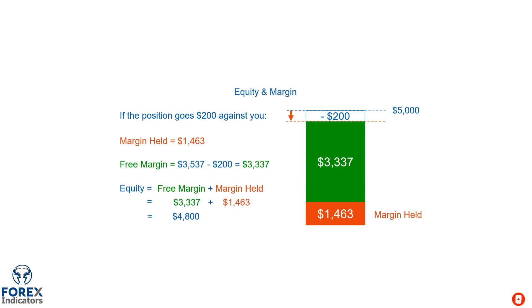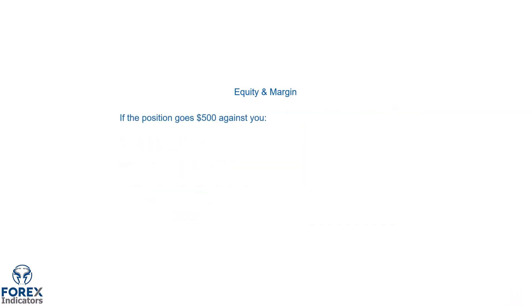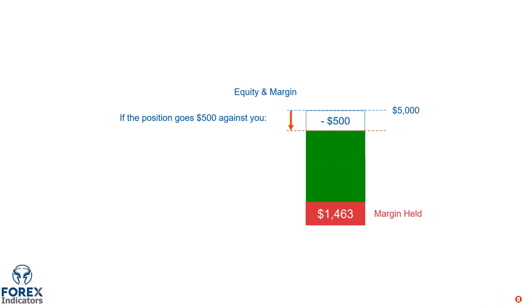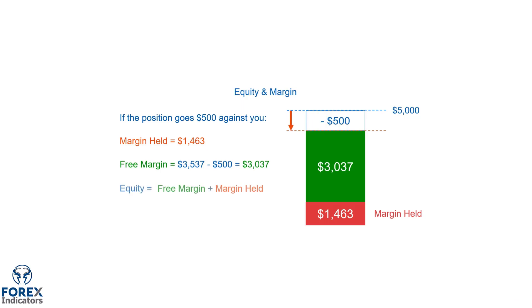Now let's see what happens if the position goes $500 against you. Once again, the margin held does not change. The free margin will now become $3,037, and the equity if you were to close this position would now become $4,500.